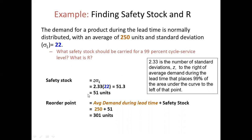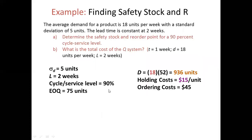The reorder point formula is: average demand during lead time plus safety stock. The average demand during lead time is 250 units, and the safety stock is 51 units, giving the reorder point.